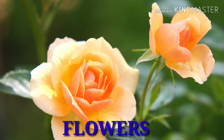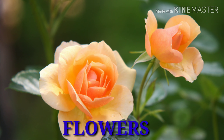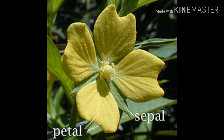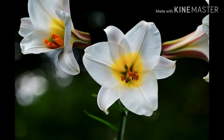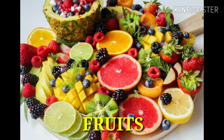Most plants have flowers. A bud blooms into a flower. A flower is usually the most beautiful part of a plant. The three prominent parts of a flower are petals, sepal, and stalk. Flowers come in different sizes, shapes, and colors, and most flowers have a sweet smell — for example, rose and lily.